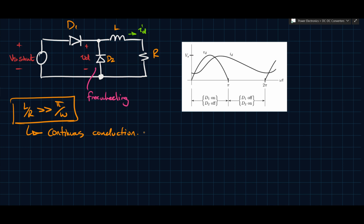It's also true that D1 and D2 can't both be off at the same time, because the current in an inductor must be continuous — there would be no path for the inductor current if both were off. So at least one must always be on. When Vs is greater than zero, D1 is on; when Vs goes negative, D1 turns off and D2 turns on.